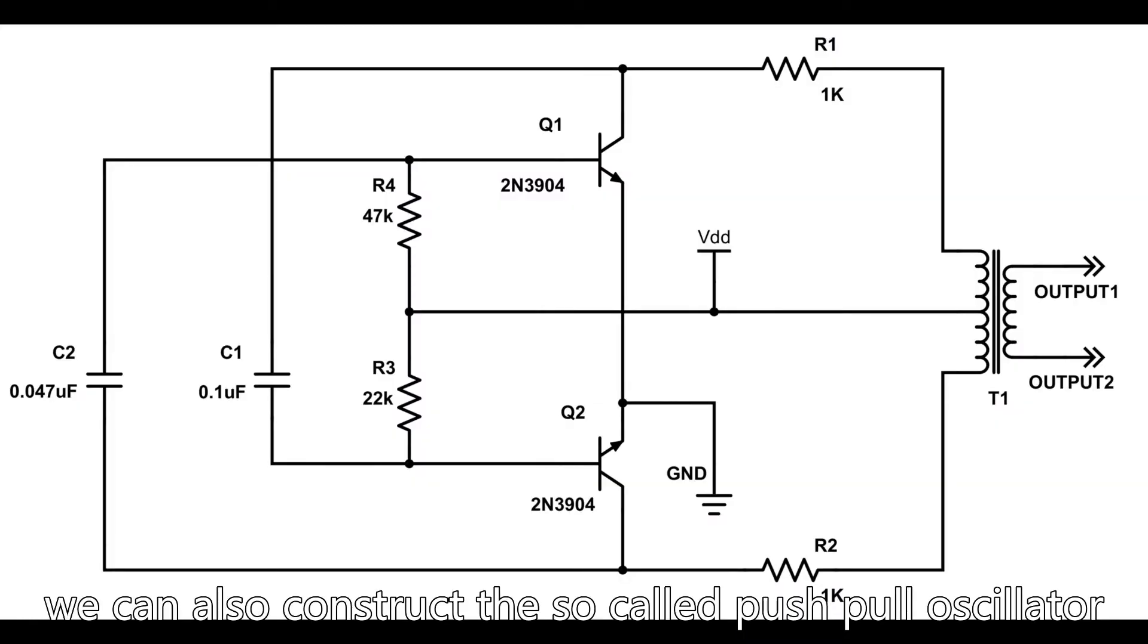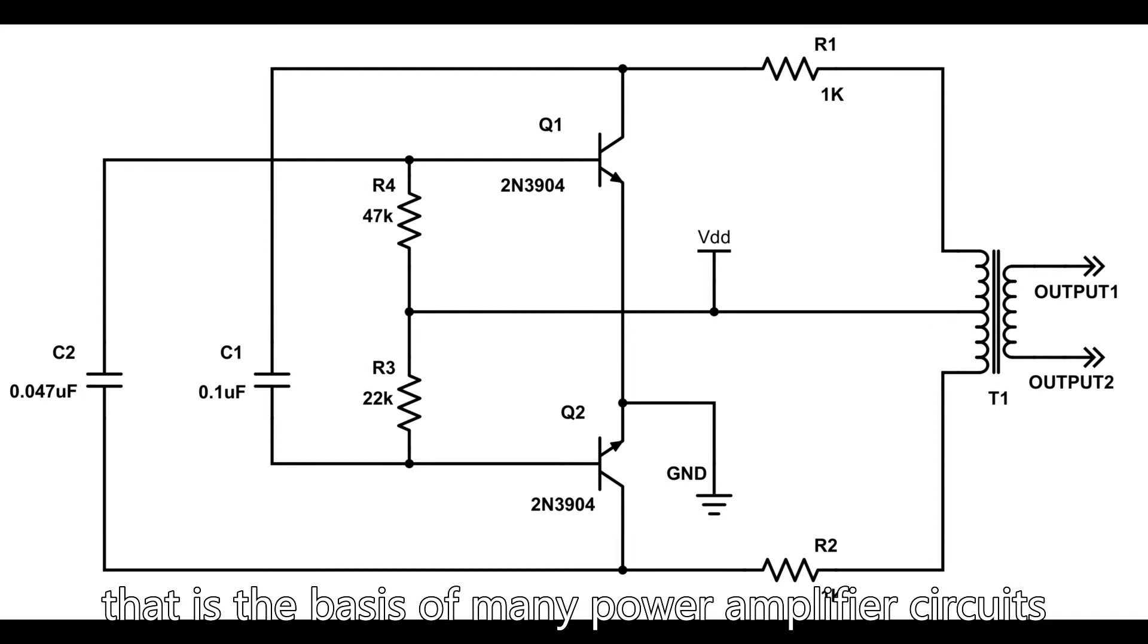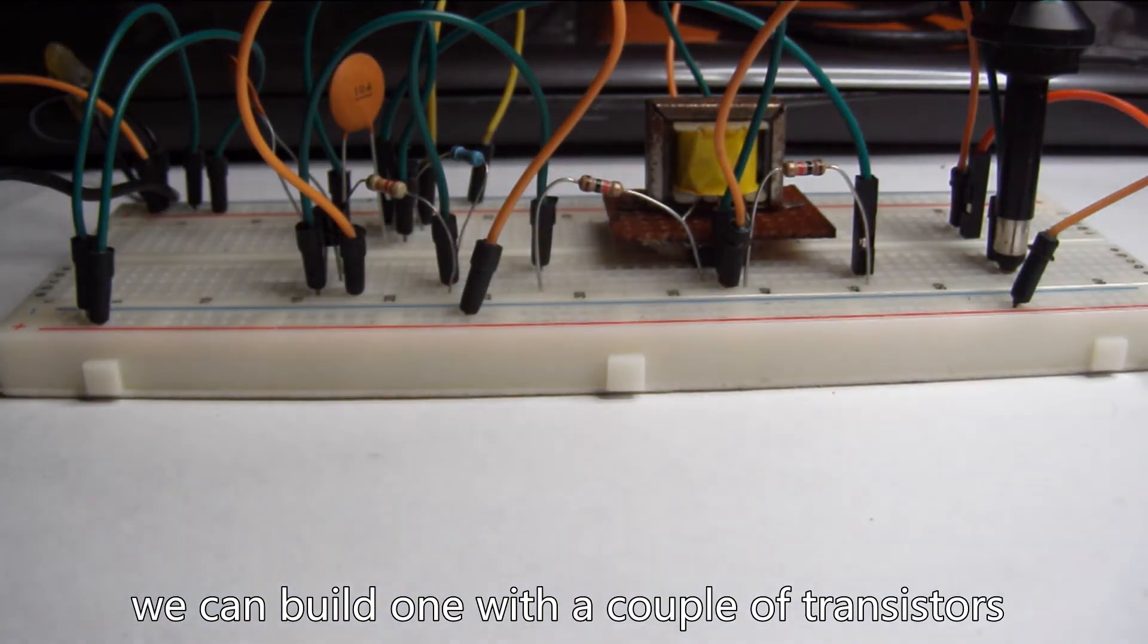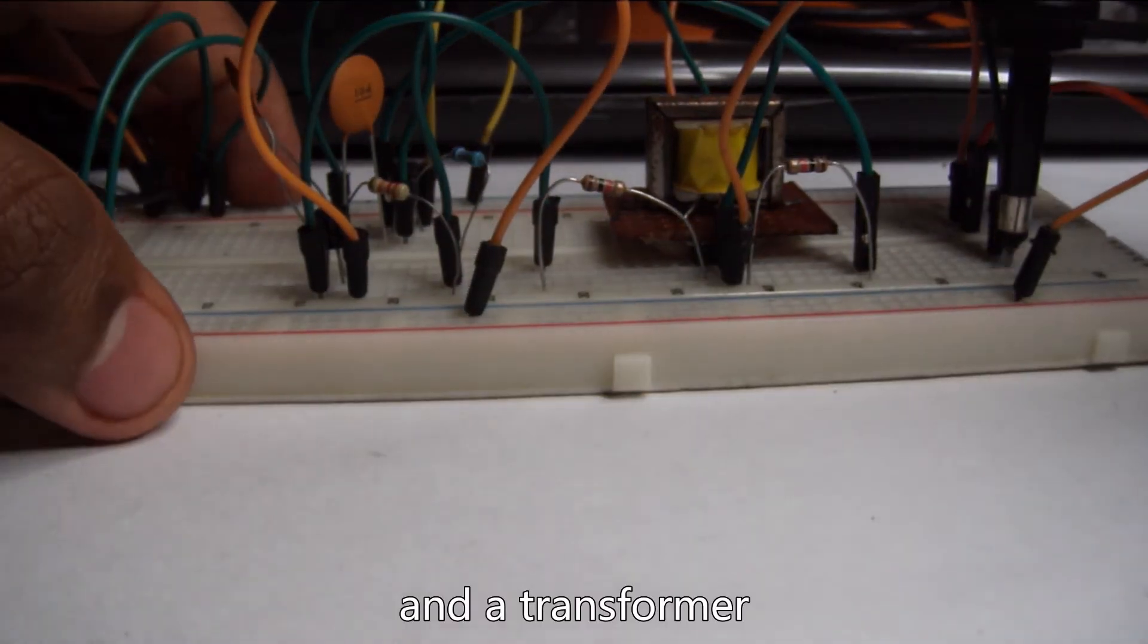We can also construct the so-called push-pull oscillator that is the basis of many power amplifier circuits and cheap square wave inverter circuits. We can build one with a couple of transistors and a transformer.